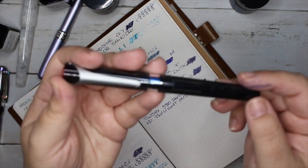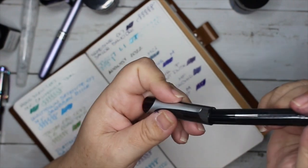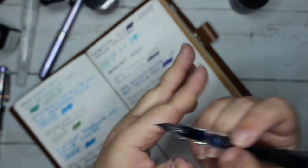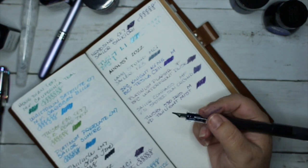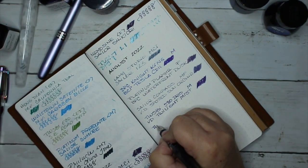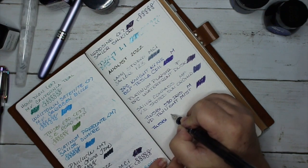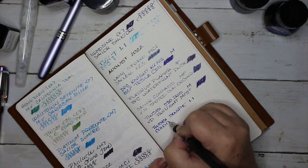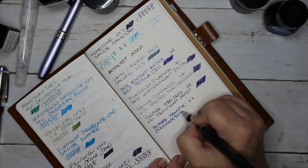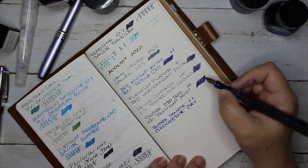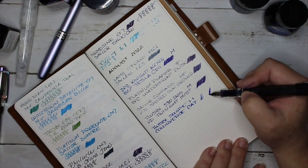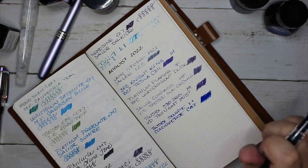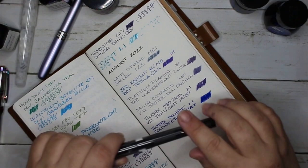Lastly, another Twsbi. This is the Twsbi Swipe. Mine has a stub nib. Look at that shimmer in there. Nice. Colorverse Cat. It's just too pretty. Super wet, which is a good thing because being a shimmer ink, it really throws all the shimmer on the page. It's so nice. My journal loves this, loves that pen combo.